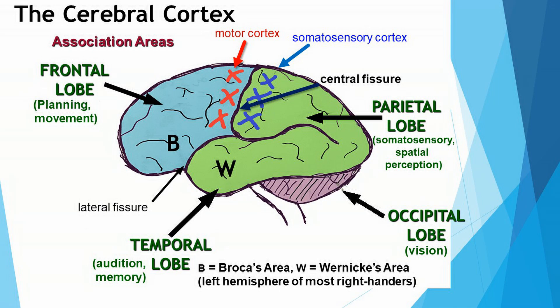Last but not least, we have the temporal lobe of the cerebral cortex. This is located below the lateral fissure on each side of the head. The temporal lobe is responsible for audition — which is hearing — and memory. I could go in with a microelectrode, stimulate a part of the auditory cortex, and that individual would say that they heard a sound. We also know that the temporal lobe is involved in memory, and damage to this portion of the temporal lobe can affect memory processing.